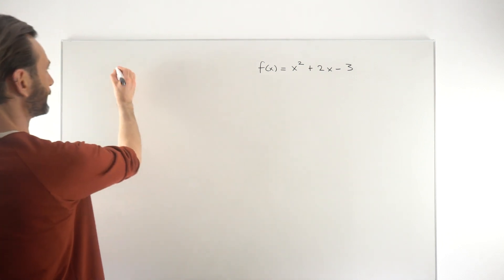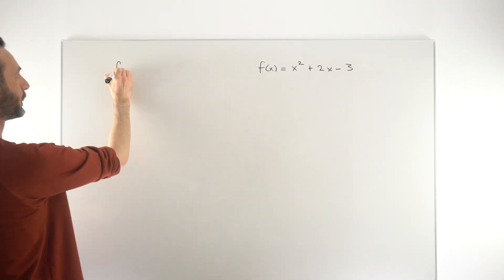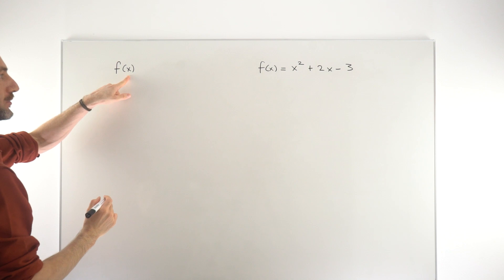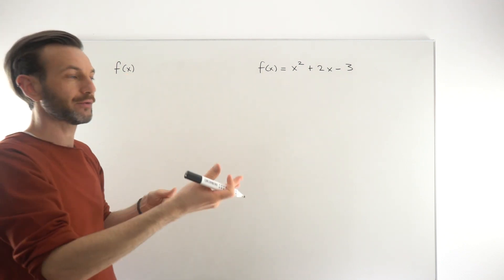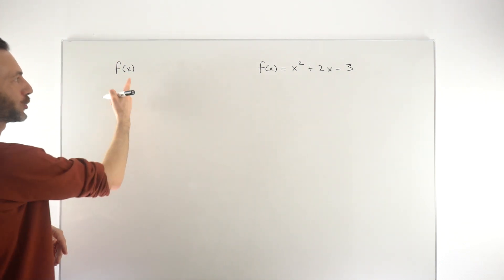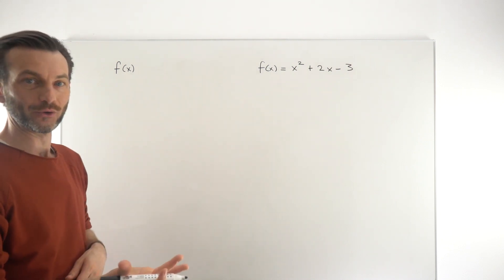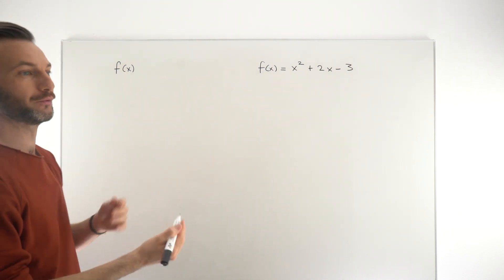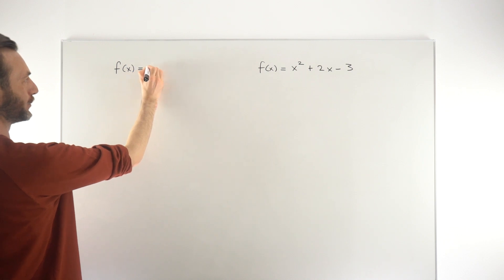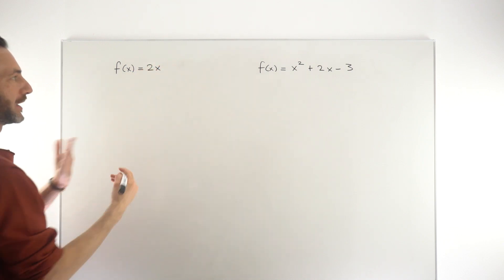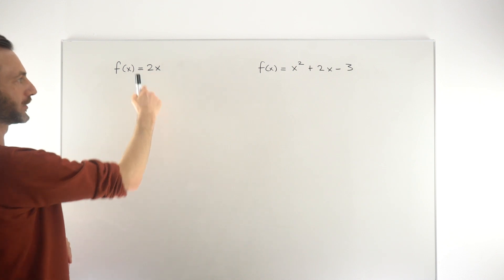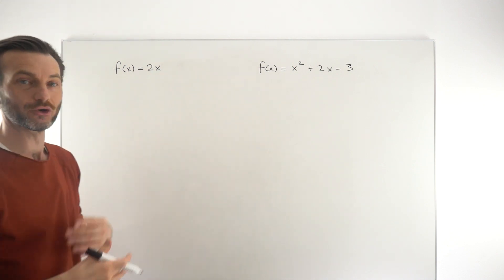So you've got some function f of x, and the x's are the input values — these are the values we put into the function. The function does something and produces some f of x value, and that's the output value. For example, the function f of x equals 2x takes the input x and multiplies it by 2 to give the output.